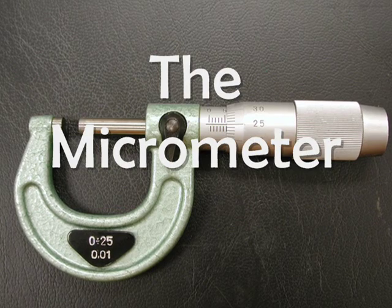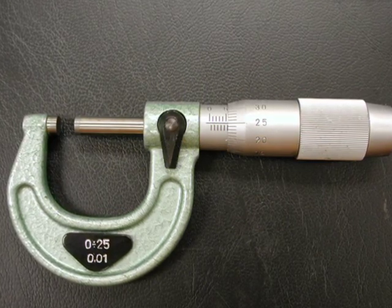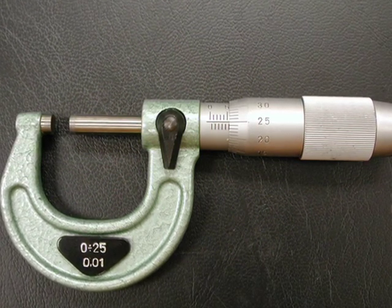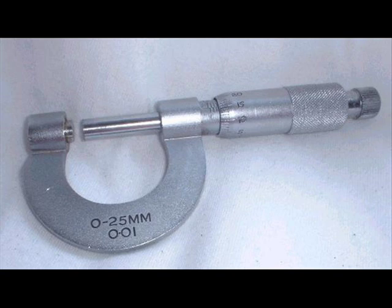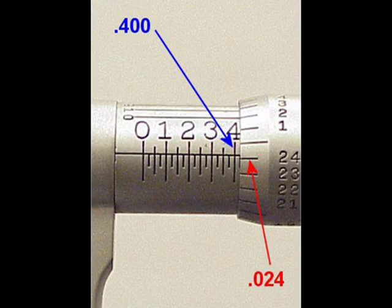A micrometer, sometimes known as a micrometer screw gauge, is a device incorporating a calibrated screw used widely for precise measurement of small distances in mechanical engineering as well as most mechanical trades, along with other metrological instruments such as dial, vernier, and digital calipers. Micrometers are often, but not always, in the form of calipers.